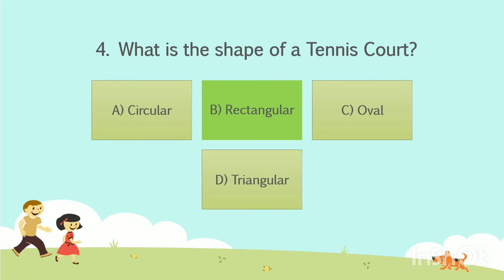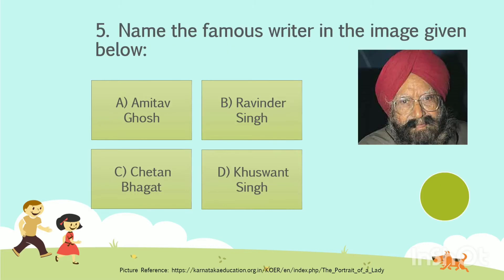Shall we go to the next question? Name the famous writer in the image given below. Option A: Amitav Ghosh. Option B: Ravinder Singh. Option C: Chetan Bhagat. Option D: Kushwant Singh. Your time starts now. The answer is Option D: Kushwant Singh.